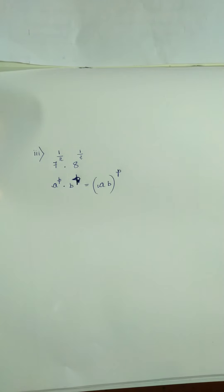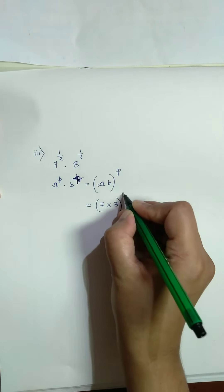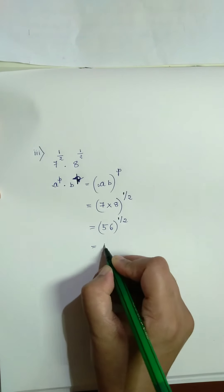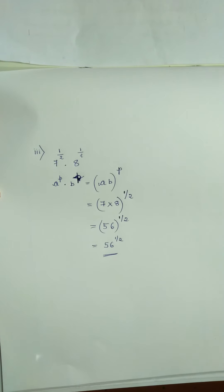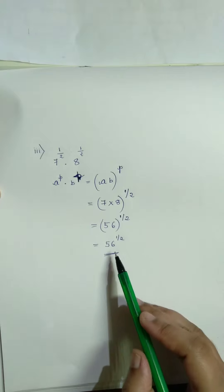Next problem: 7 to the power 1 by 2 into 8 to the power 1 by 2. This is of the form a to the power p into b to the power p is equal to ab whole to the power p. Therefore a is 7, b is 8, and p is 1 by 2. So a to the power p into b to the power p equals ab whole to the power p, which is 7 into 8 whole to the power 1 by 2. Since 7 times 8 is 56, the answer is 56 to the power 1 by 2.